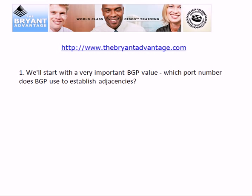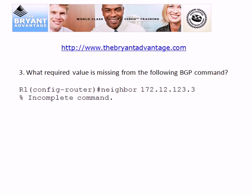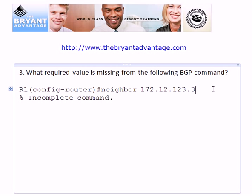BGP uses TCP port 179 to create and maintain its adjacencies. For question 2, A and D are correct. BGP and EIGRP both use autonomous systems to group routers logically. There is no requirement for BGP routers to be directly connected in order to become neighbors, however you do need to specify the potential neighbor's AS number using 'remote-AS' after the neighbor command.